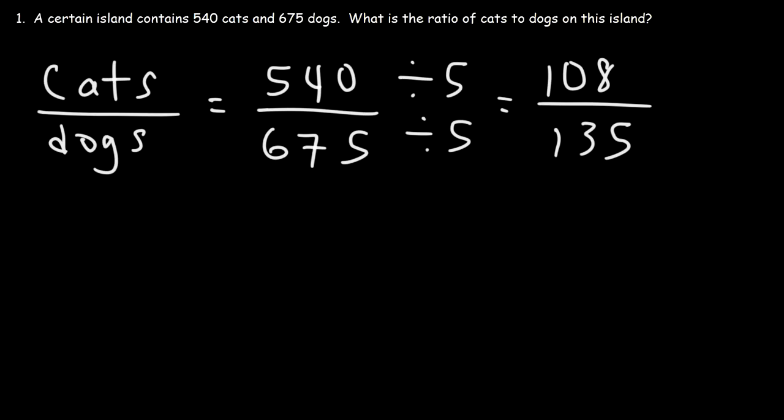Now we'll need to simplify this further if possible. So what number goes into 108 and 135? Let's find out. It turns out that both of these numbers is divisible by 9. 108 divided by 9 is 12, and 135 divided by 9 is 15. Now we can reduce it even further. 12 is 4 times 3, 15 is 5 times 3, and so we could cancel a 3.